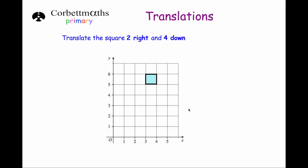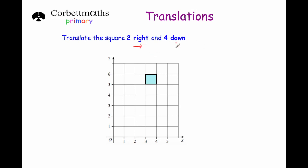Next question. This one is on a coordinate grid with an x-axis and y-axis. We'll use the same approach — it says translate the square two squares to the right and four squares down. We'll do one point at a time.